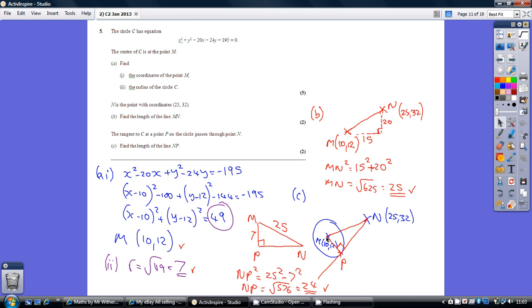Well, we know that MP is 7, because that's the radius of the circle. We've just worked out that MN is 25. Now, the key bit is this is a right-angled triangle, because the angle between a tangent and a radius is 90 degrees. So, because this is 90 degrees, we just have another Pythagoras situation here.